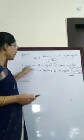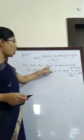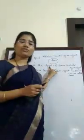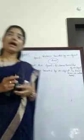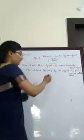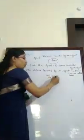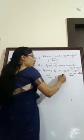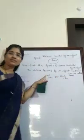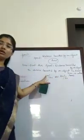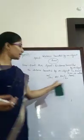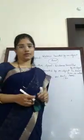Speed is the distance travelled by an object in unit time. The basic unit of speed is meter per second or kilometer per hour. The unit of distance is meter or kilometer, and the unit of time can be second or hour.